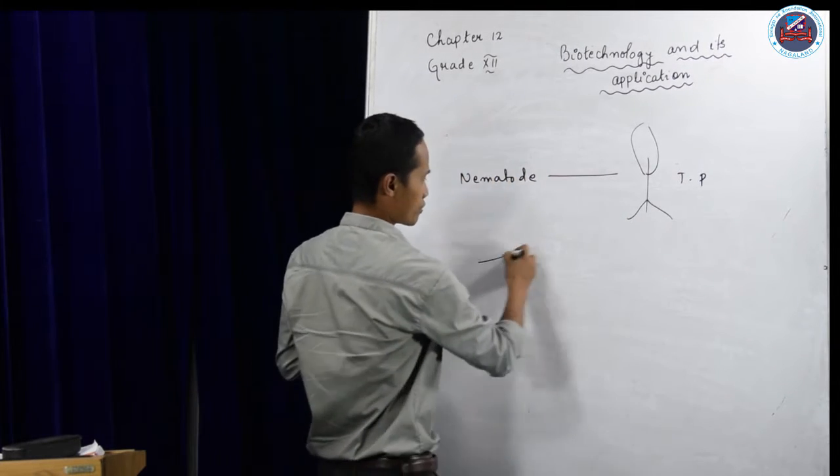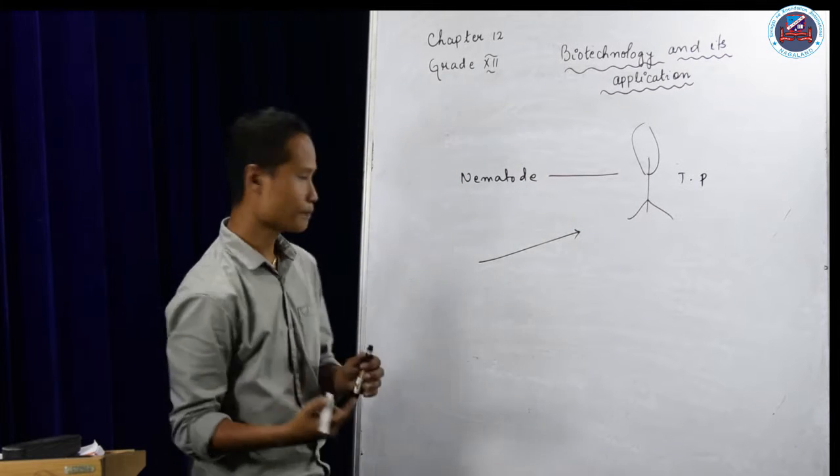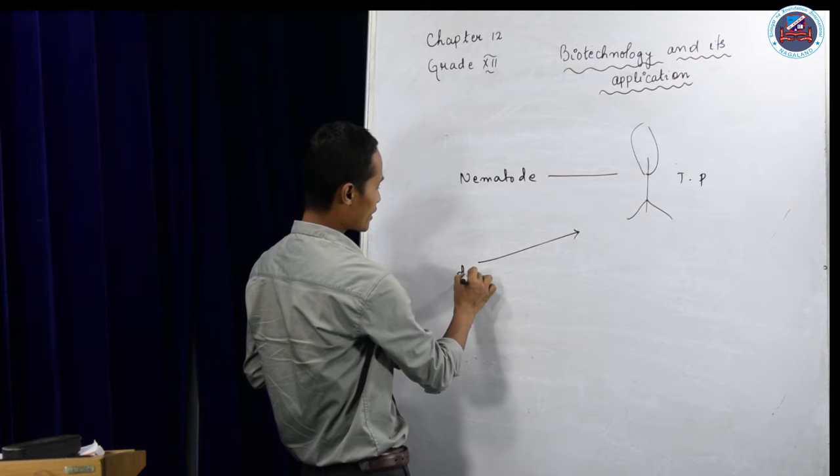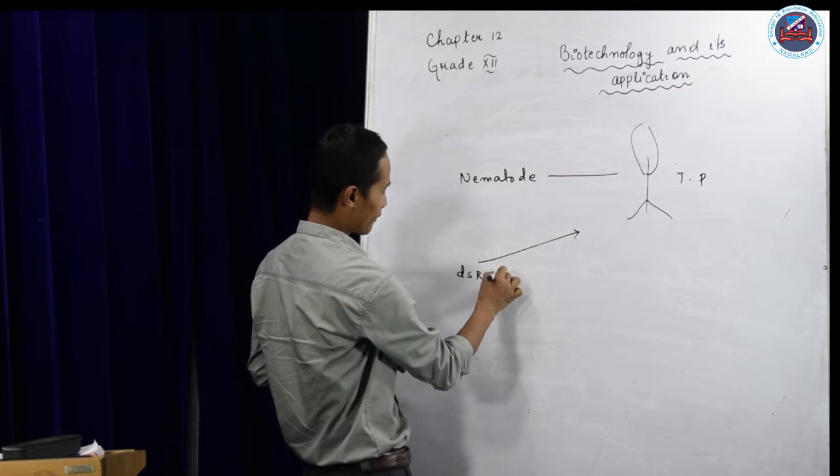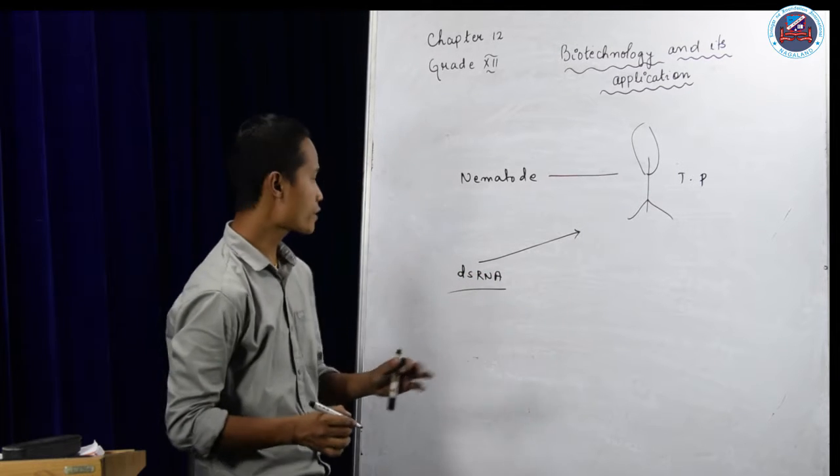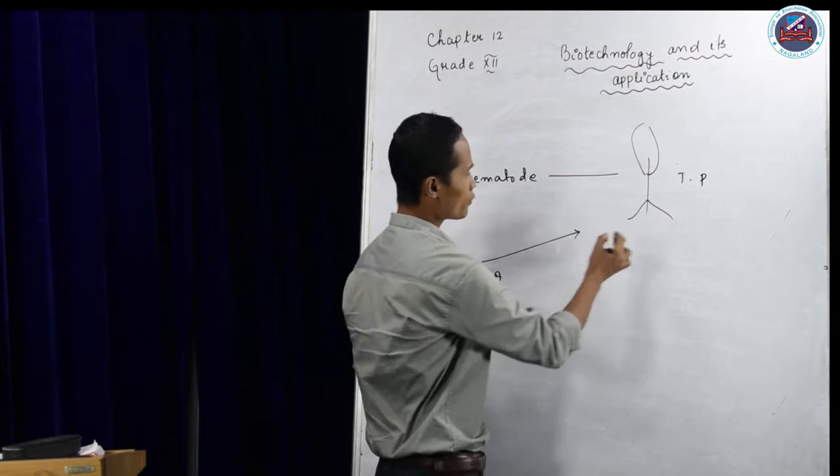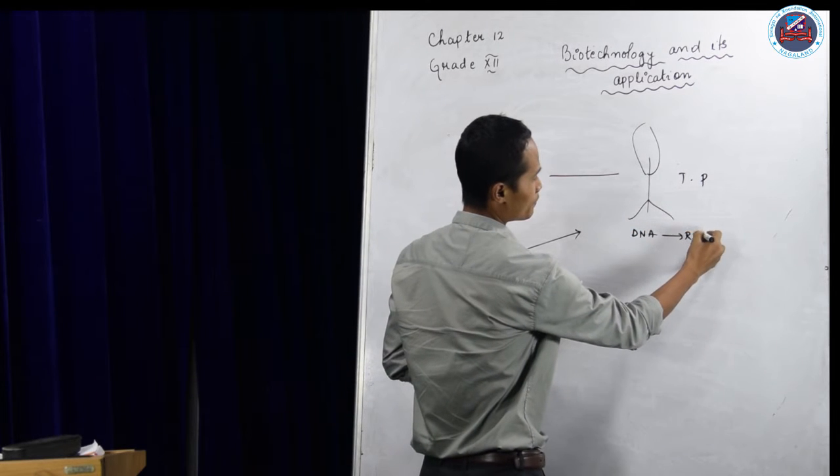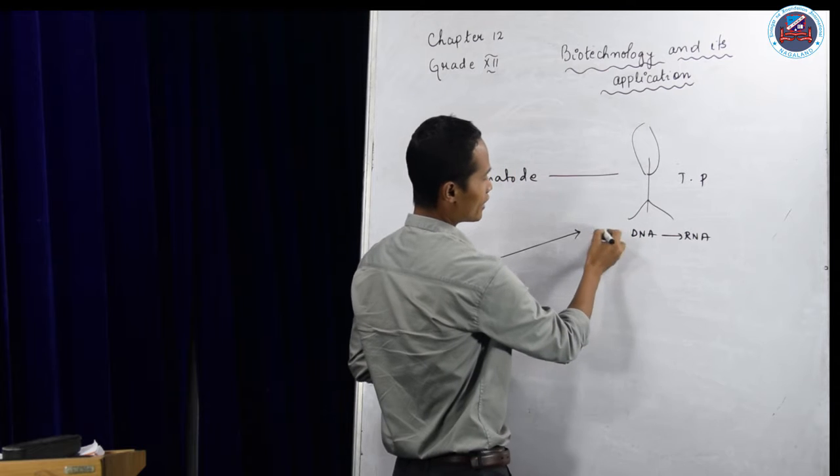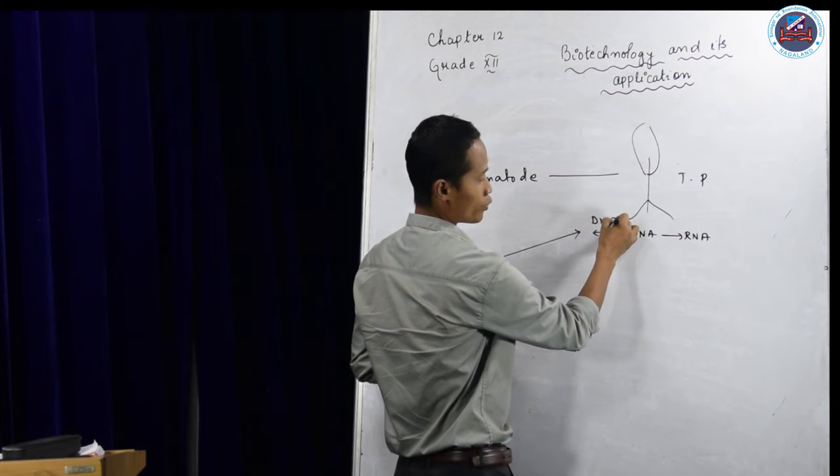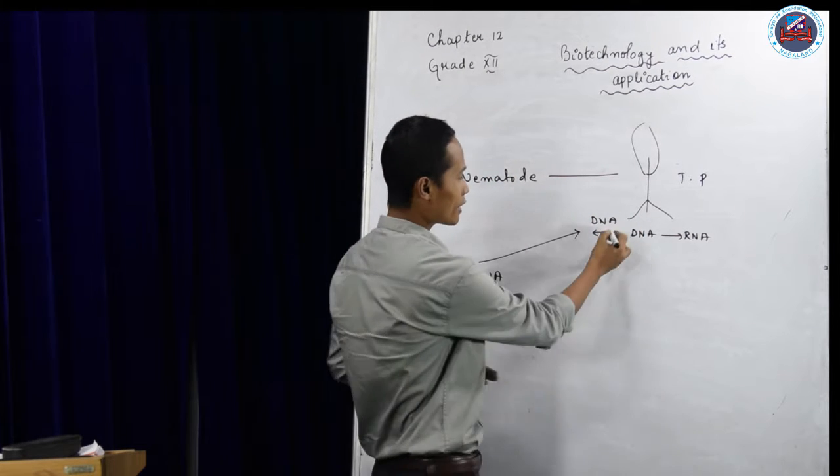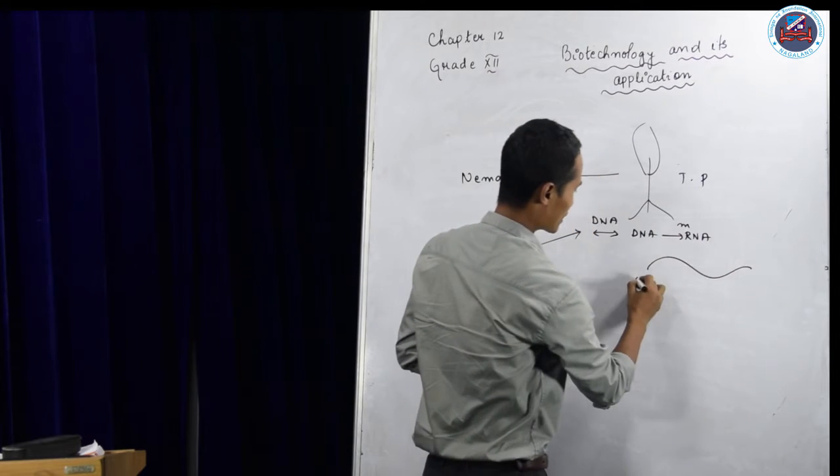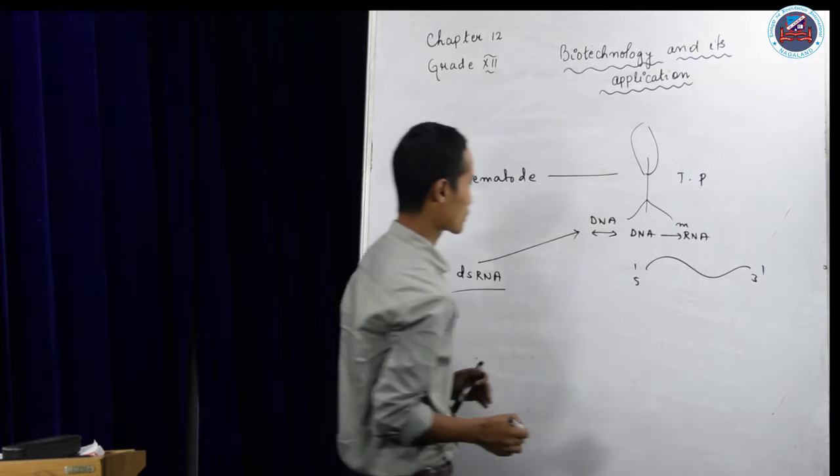If we introduce double-stranded RNA, the nematode will produce DNA to RNA. The normal process will take place - DNA to DNA, then DNA will form mRNA, 5' to 3'.